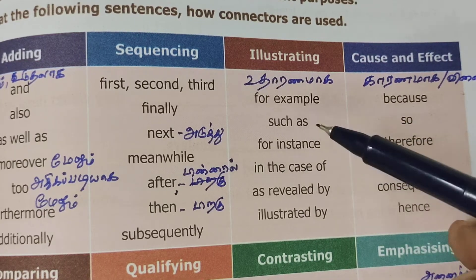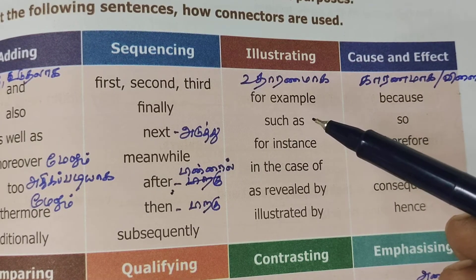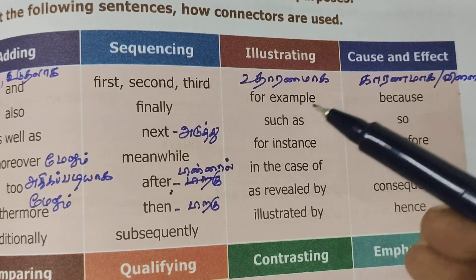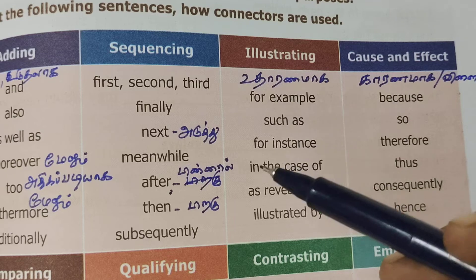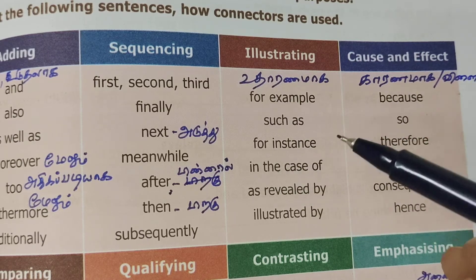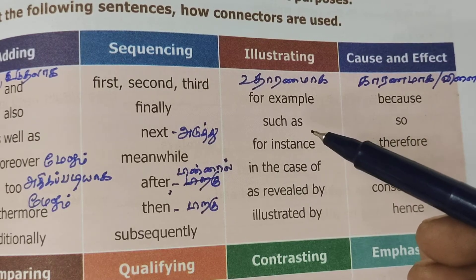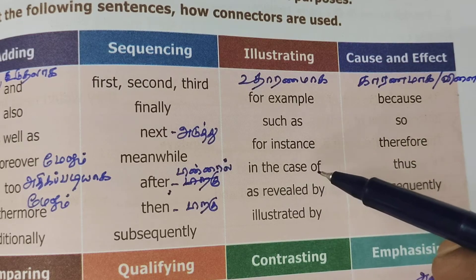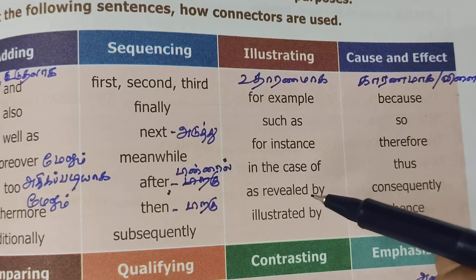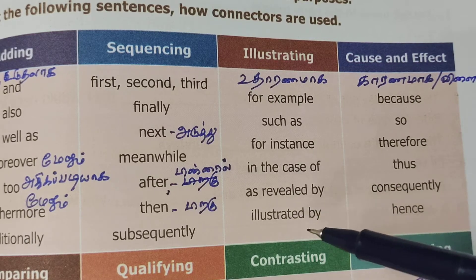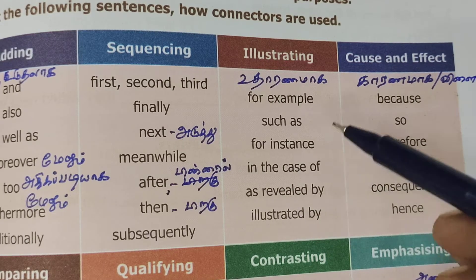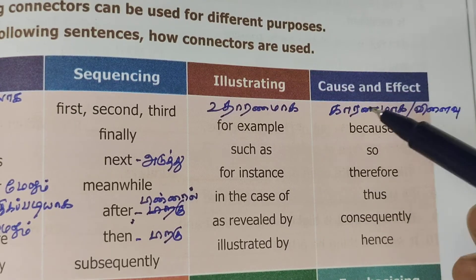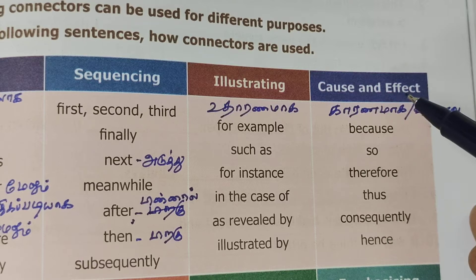Then illustrating connectors. For example, if you speak, you can connect using 'for example', 'for instance', 'in the case of', 'as revealed by', and 'as illustrated by'. These are used to give examples and illustrate a point.